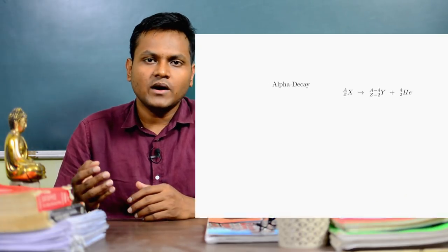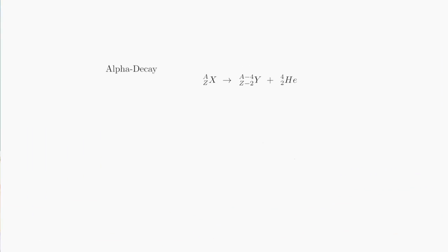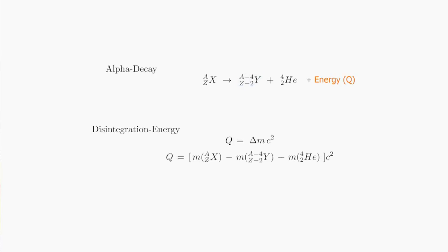The alpha particle has mass number four and atomic number two, so the parent nucleus becomes a daughter nucleus with mass number A minus four and atomic number Z minus two. The energy released comes from the mass defect: the mass of the parent nucleus is greater than the combined mass of the daughter nucleus and the alpha particle. This mass defect is emitted as energy, mostly as the kinetic energy of the alpha particle.